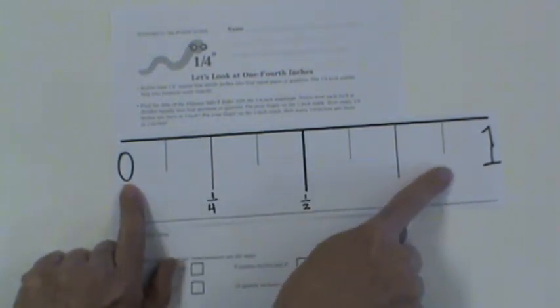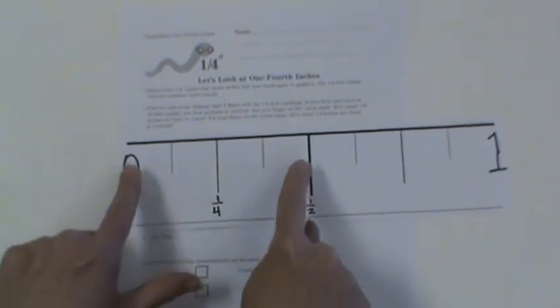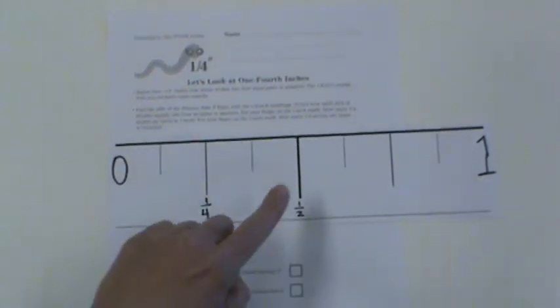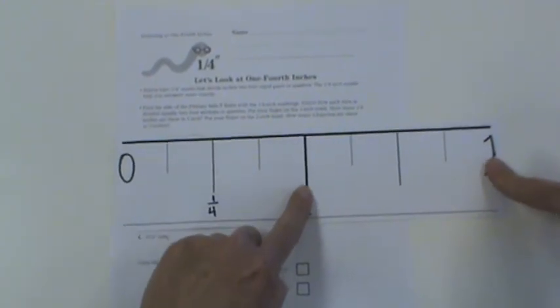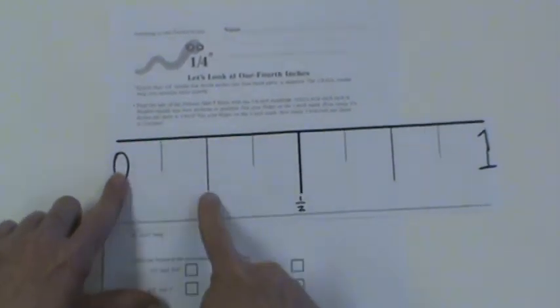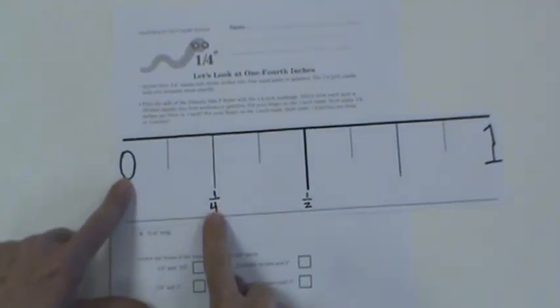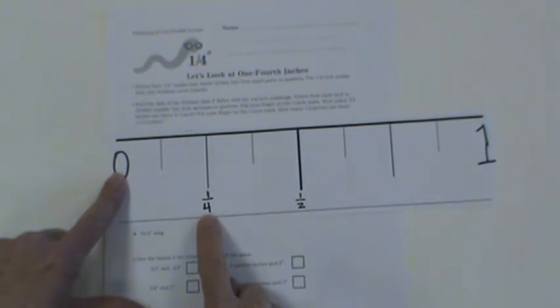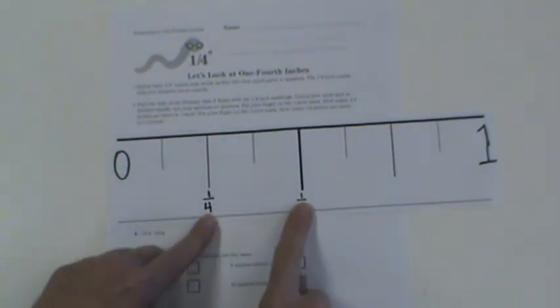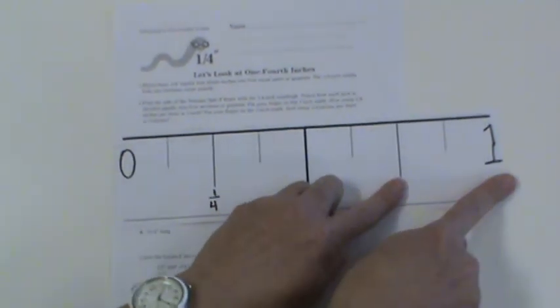There's the one, and we've talked about the half. There's one half of an inch, there's the other half, and if you look in between each half, you'll see more marks. From zero to here, there's a quarter, there's another fourth, there's another fourth, and there's another fourth.